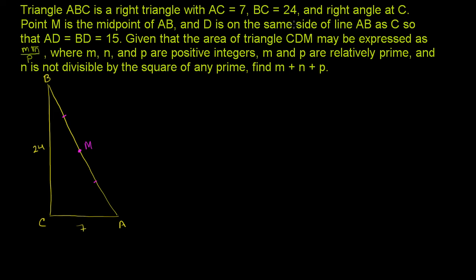And D is on the same side of AB as C — the bottom left-hand side of AB — such that AD equals BD equals 15. So D is going to be someplace over here, equidistant between A and B. All of the points equidistant between A and B sit on a perpendicular bisector line. So D sits right over here, 15 away from both A and B.